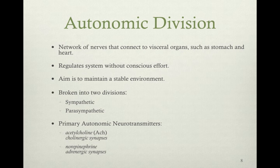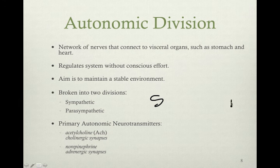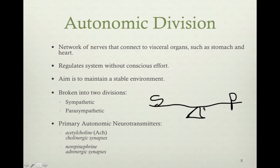Autonomic division: a network of nerves that connects to visceral organs such as the stomach and heart, regulating the system without any conscious effort. The aim is to maintain a stable environment. It is broken down into two divisions — sympathetic and parasympathetic — and can be thought of like a teeter-totter always trying to maintain balance in the body.